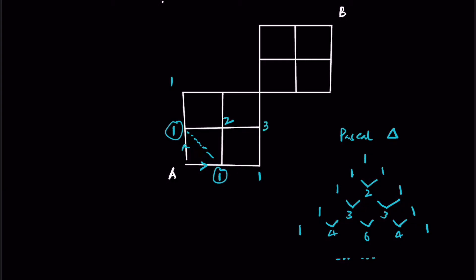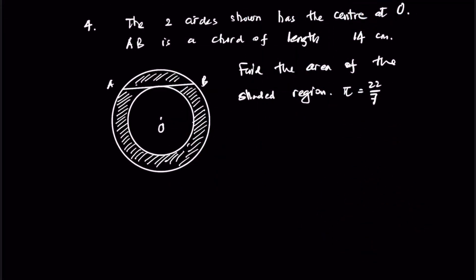For example, 1 + 2 = 3, 1 + 2 = 3, 3 + 3 = 6. Writing 6s and adding diagonal numbers: 6 + 6 = 12, 12 + 6 = 18, 6 + 12 = 18, 18 + 18 = 36. Following the rule of Pascal's triangle, the number of shortest paths is 36.